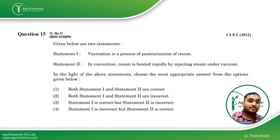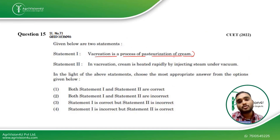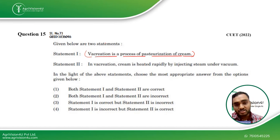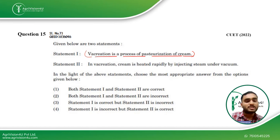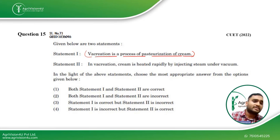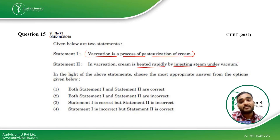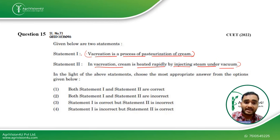Coming to Question 15: vacreation is a process of pasteurization of cream. Just as milk has its own pasteurization process, cream uses a different terminology and process. In the second statement, cream is heated rapidly by injecting steam under vacuum — this is a high-temperature short-time method. Both statements are correct, making the first option the right answer for this question. This question was also asked in CUET 2022.